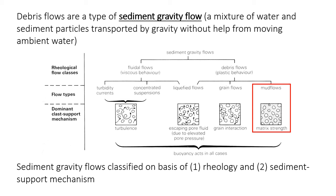There are four major types of sediment gravity flows — we'll cover the others later when discussing different sedimentary environments. Today we'll focus on debris flows. The four types are differentiated on the basis of rheology, another word for the behavior of the flow, and the sediment support mechanism. Debris flows are defined by having a laminar rheology and matrix strength as the main sediment support mechanism.